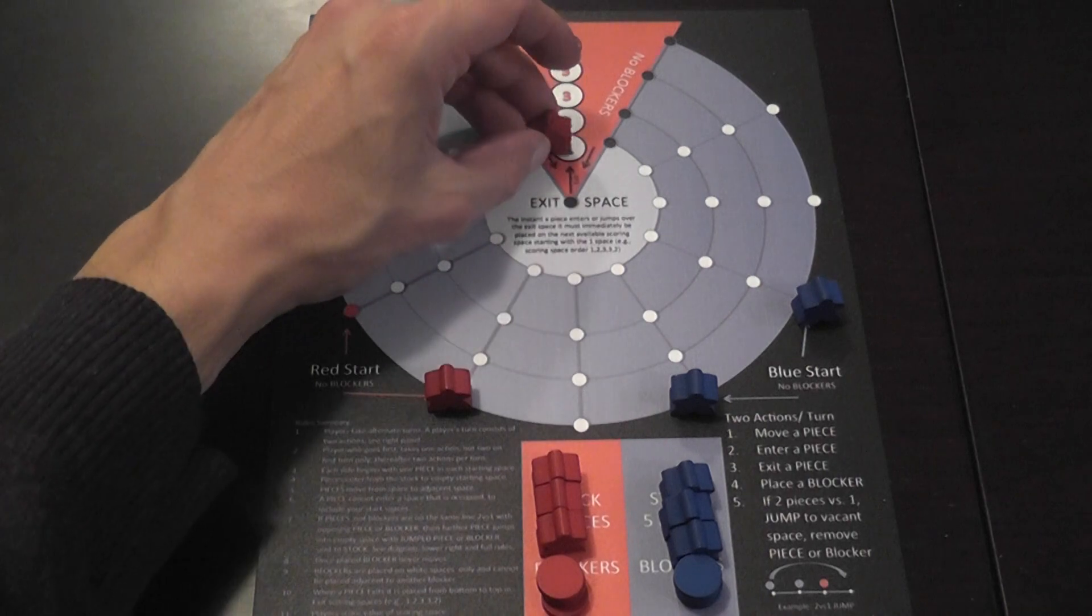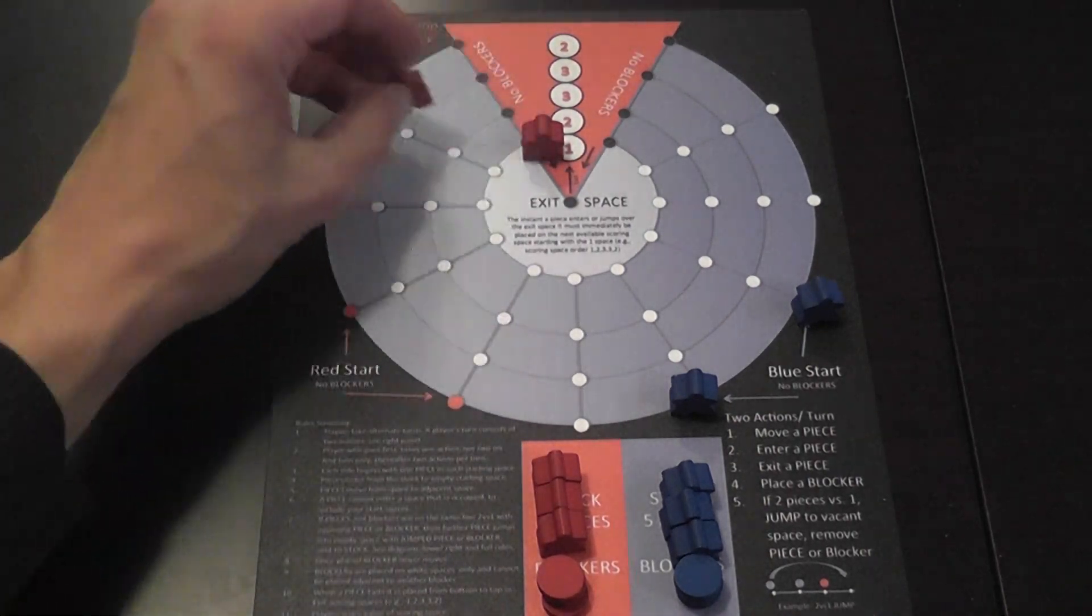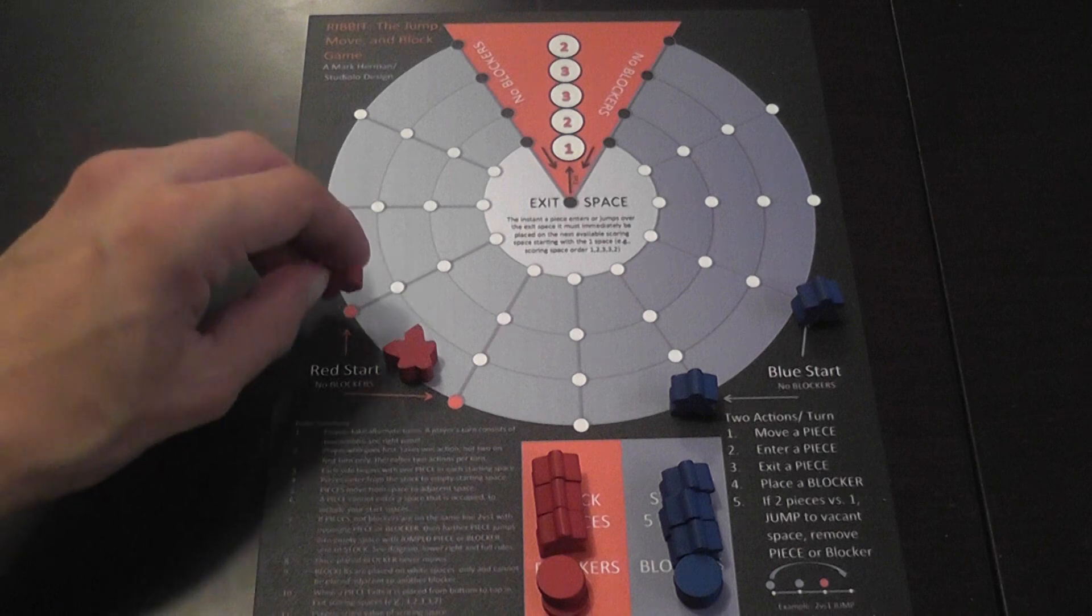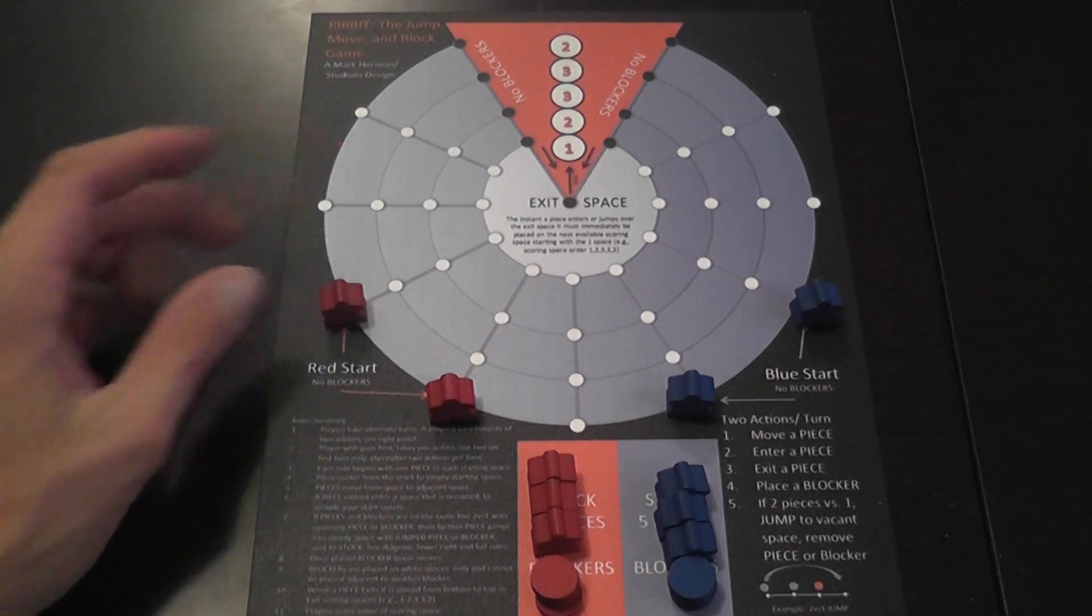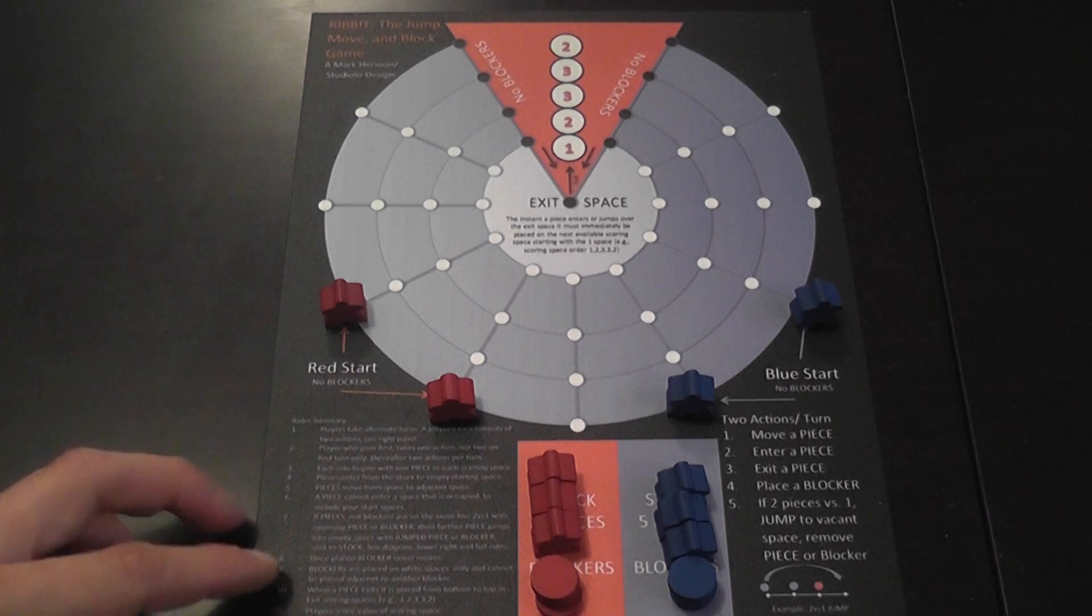Each meeple scores the number of points indicated on the space where the meeple will land. So the first meeple to get there will be worth one point, the second meeple two points and so on. The purpose of the game is to score six points. Six points wins. First player to get there wins and ends the game.